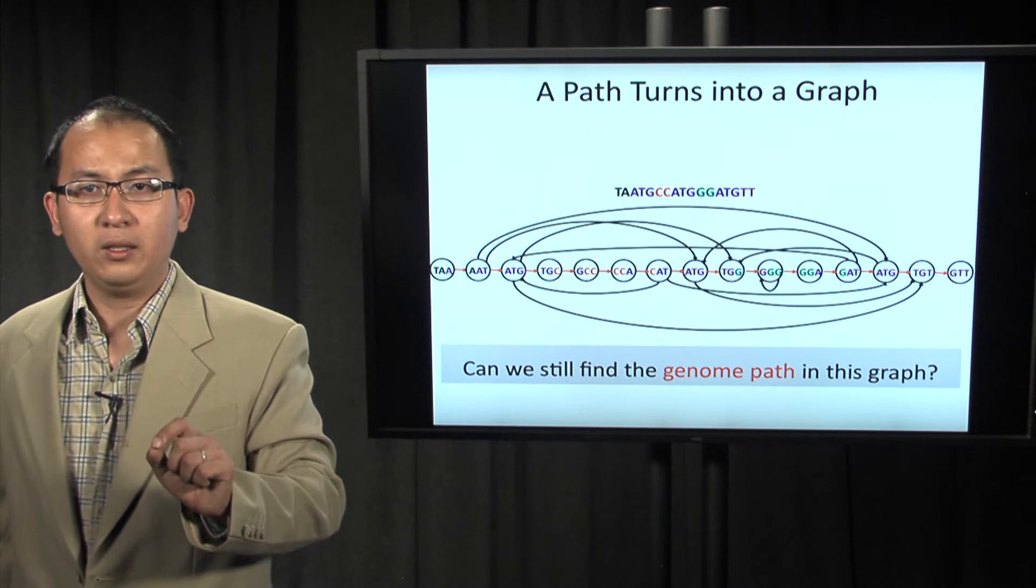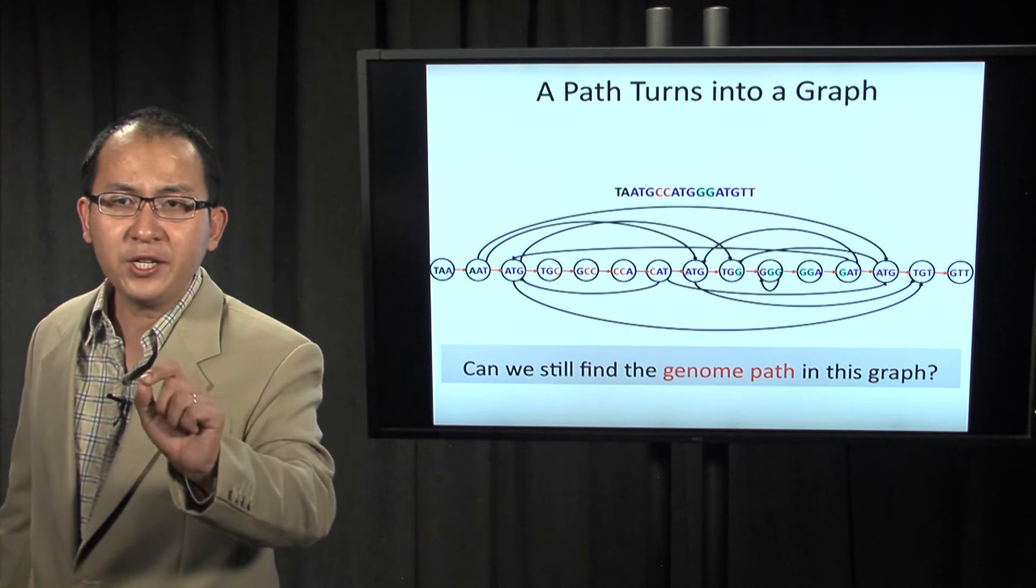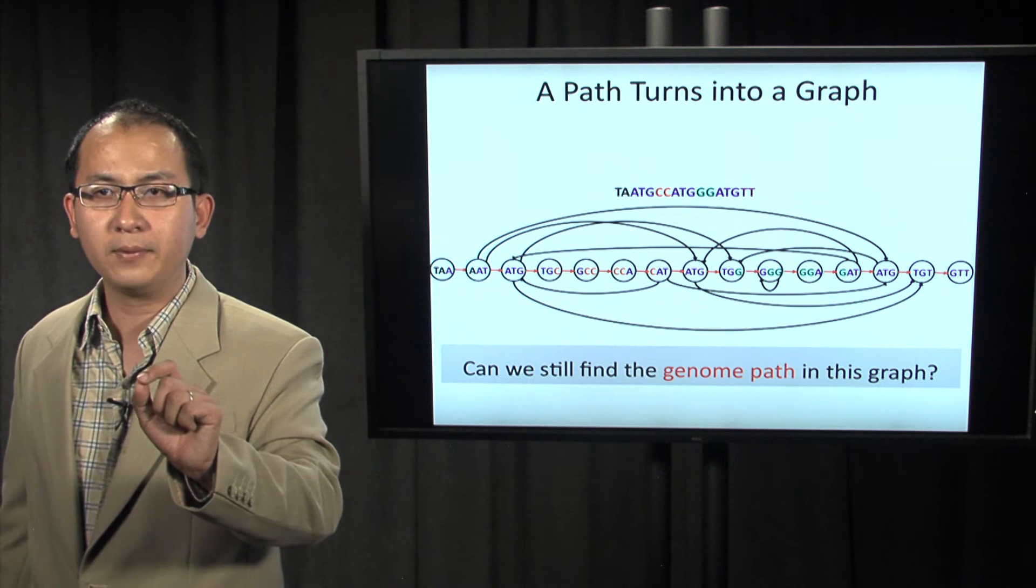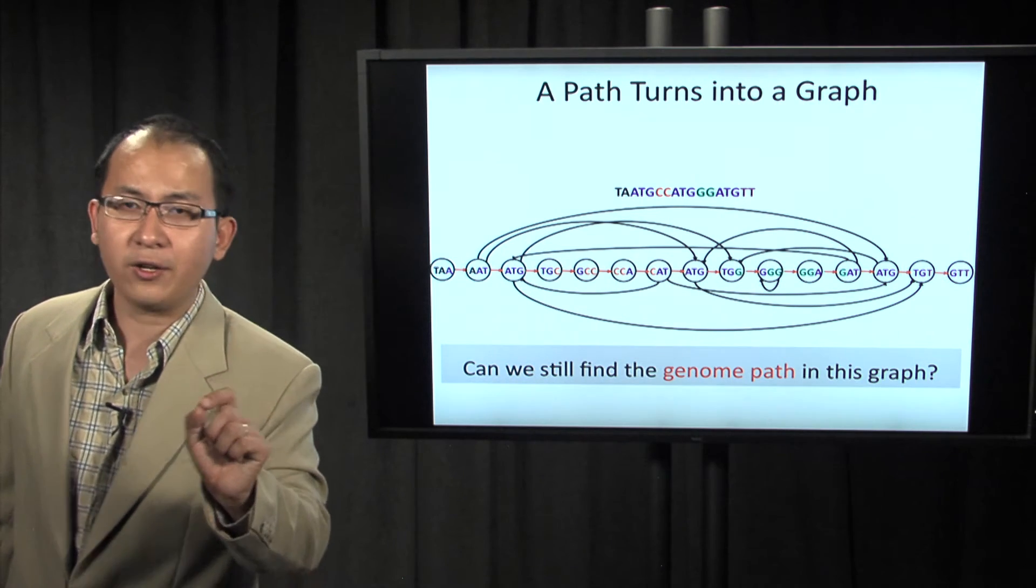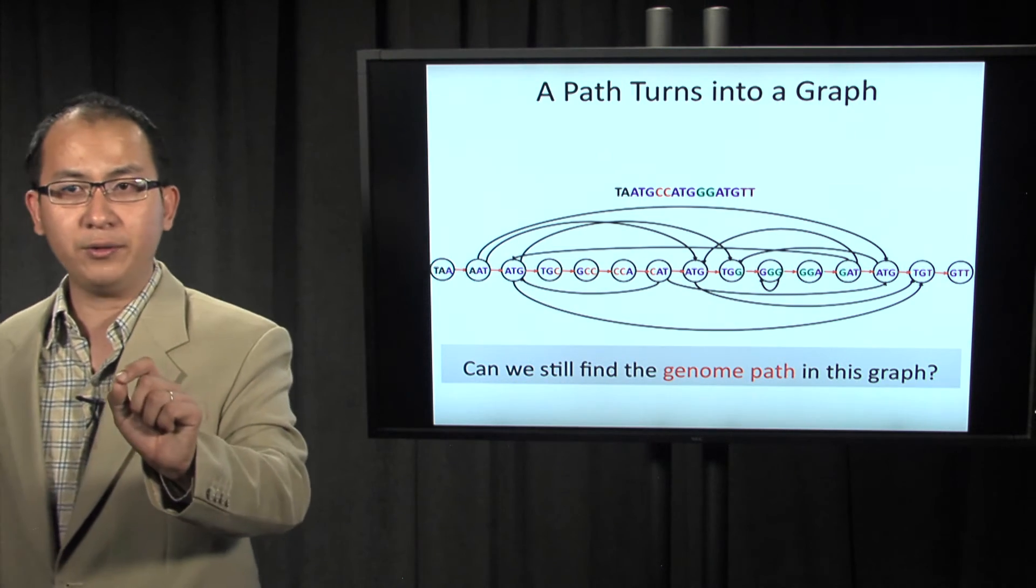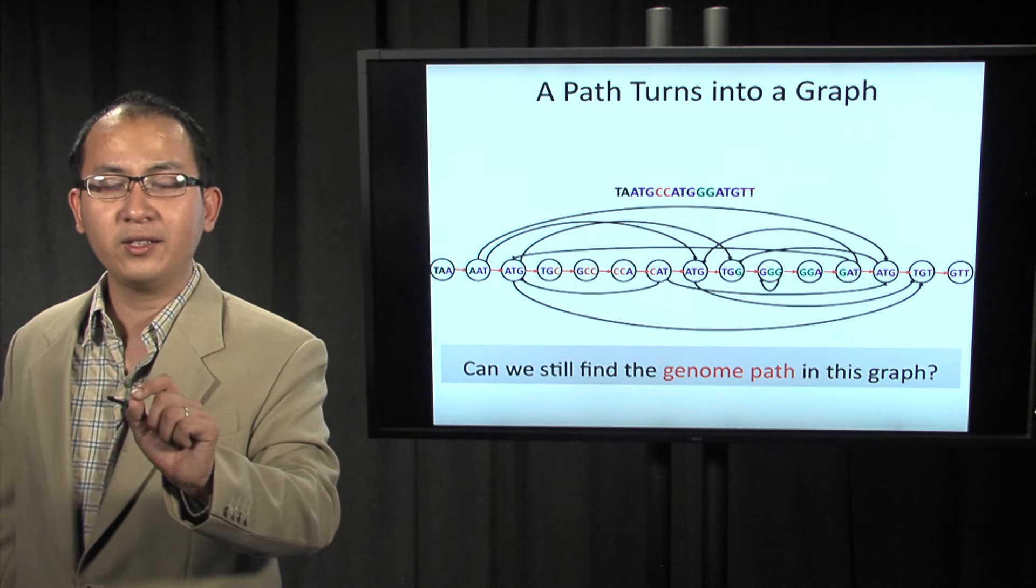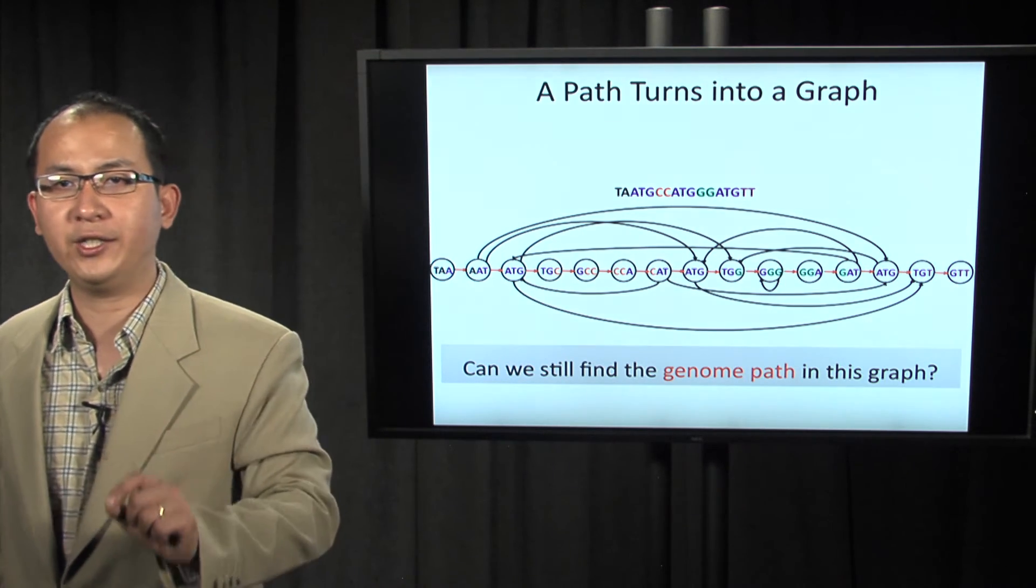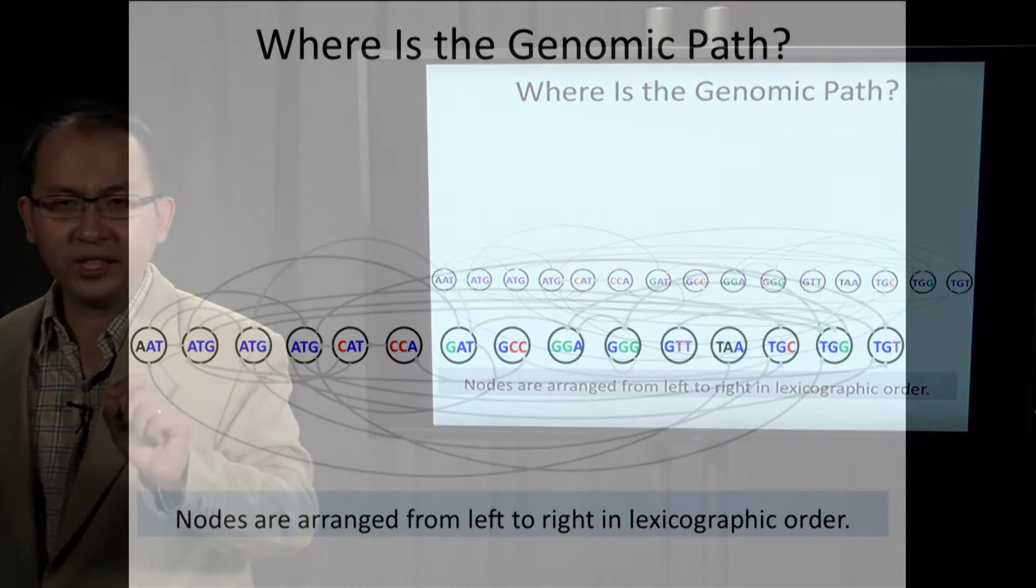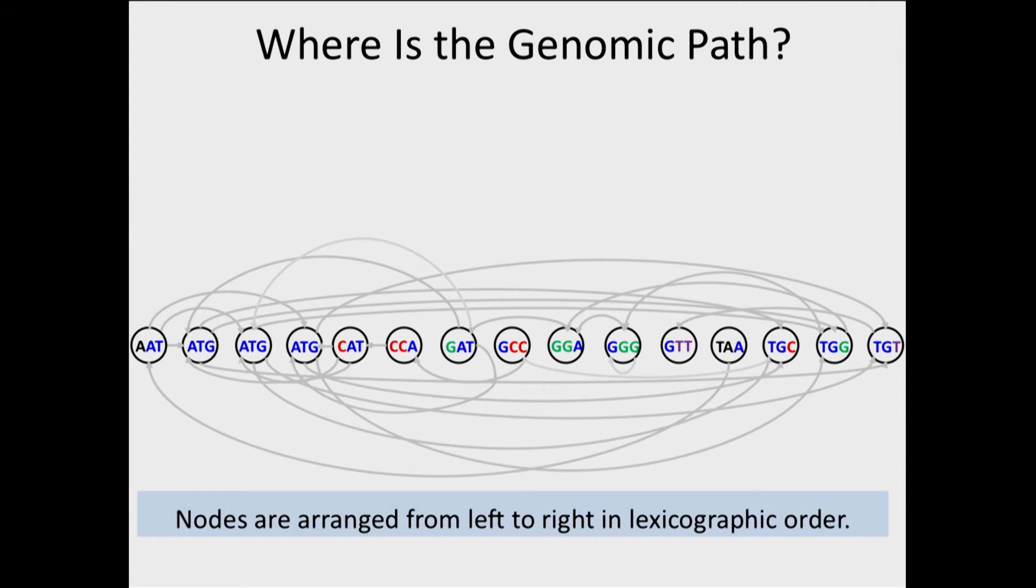In reality, the position information is not available. So if I slightly reorder the nodes in this graph, the task becomes more challenging. For example, in this case, nodes are arranged from left to right in lexicographic order.